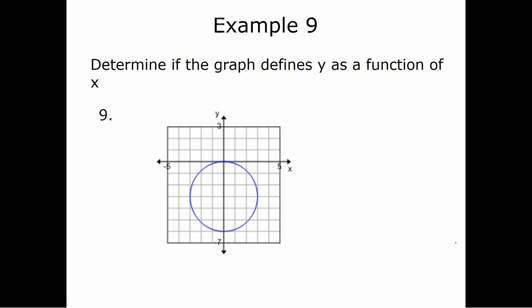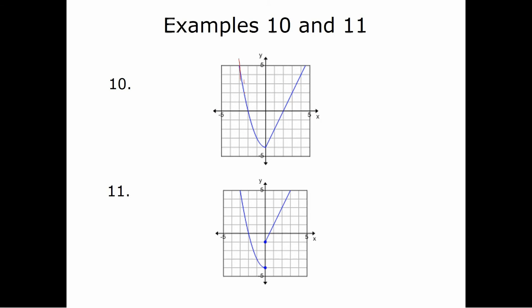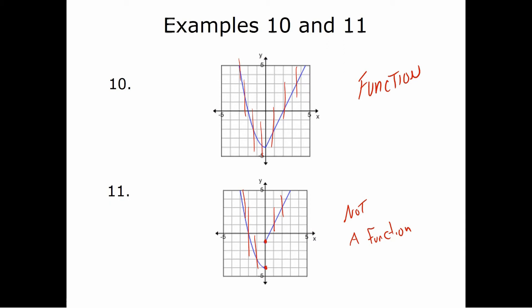Let's apply the vertical line test. The first graph: a vertical line hits two places, so it's not a function. The second graph: no vertical line hits more than one point, so it is a function. The third graph looks like a function, but notice at one x value there are two closed circles — two different points — so that vertical line hits two points, making it not a function. Be careful with piecewise functions or graphs with breaks.